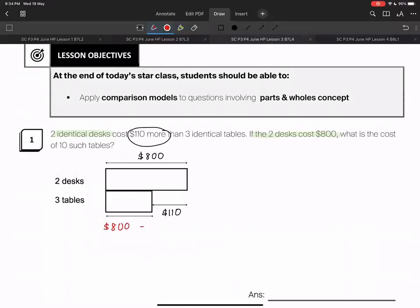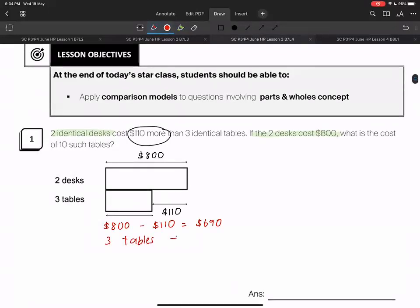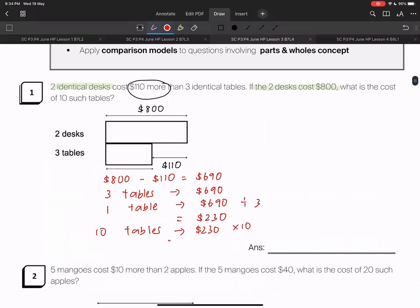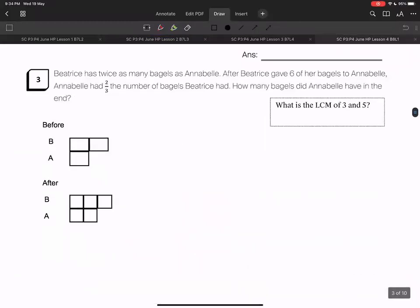Are you able to find the cost of the three tables? We will get 800 minus 110, and that will give us 690. That will be the cost of three tables. One table will give us 230. Ten tables, 230 times 10, we get 2300 dollars.